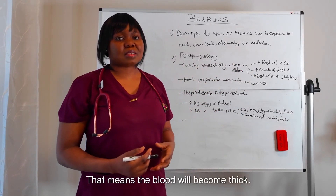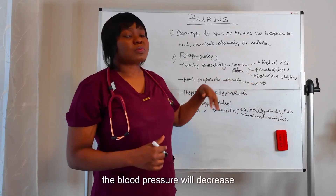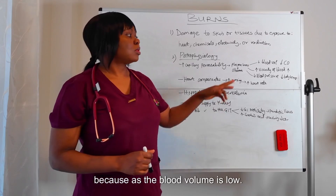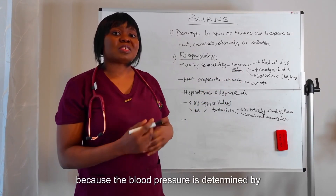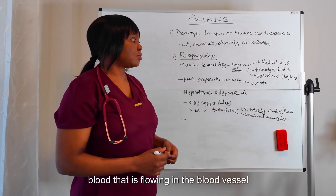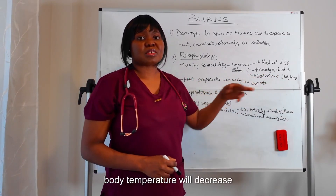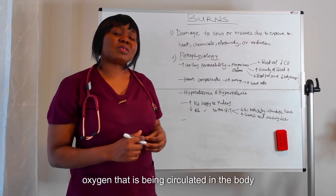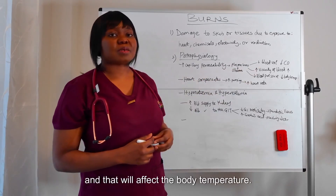When this happens, the blood pressure will decrease also, because as the blood volume is low, the blood pressure will also be low — blood pressure is determined at least in part by the amount of blood flowing in the blood vessels. Also, body temperature will decrease because as blood volume decreases, oxygen being circulated in the body will be low, and that will affect the body temperature.